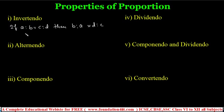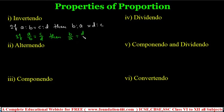If we write this in fractions: if a by b equals c by d, then b by a equals d by c. The same ratio — you can convert into fractions as well. This is invertendo.